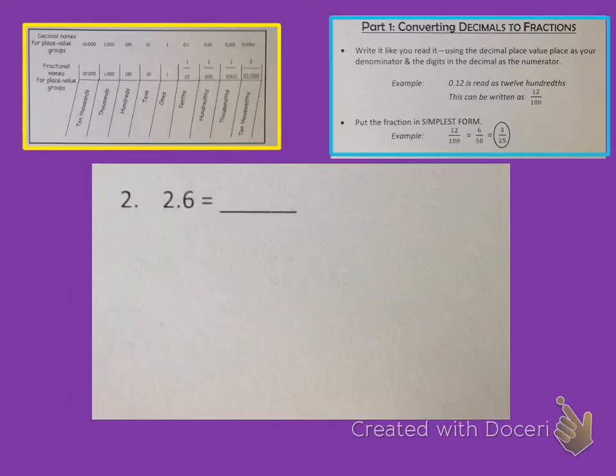Now we have this number where there is a number to the left of the decimal, which is a whole. So we say 2 and 6 whatever place value it's in. And that's in the tenths place value. So this is 2 and 6 tenths. So I'm going to write 2 as my whole number and then 6 over 10 as my fraction like this.